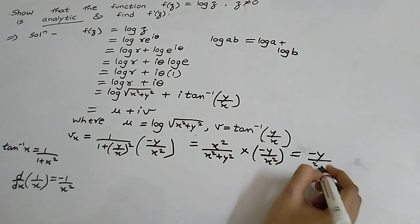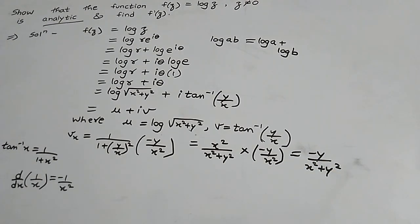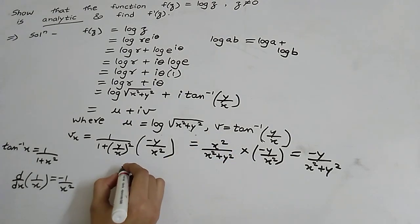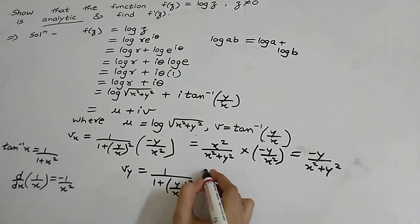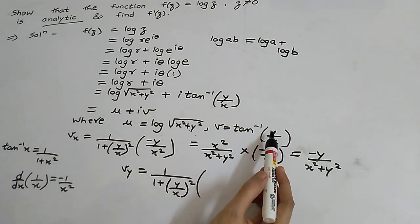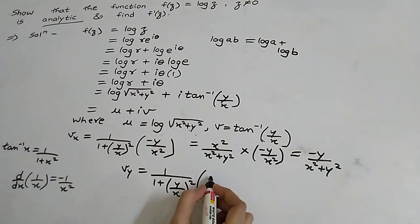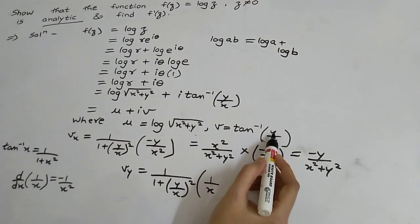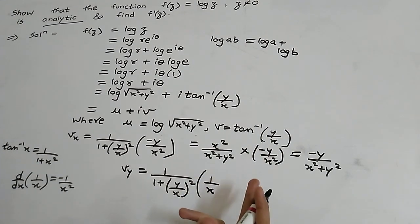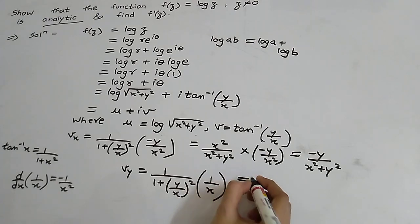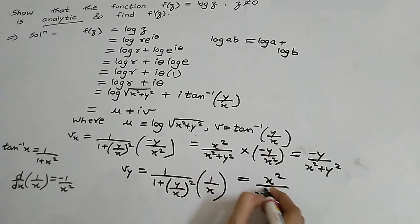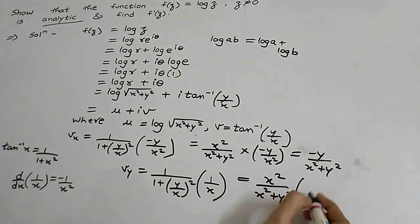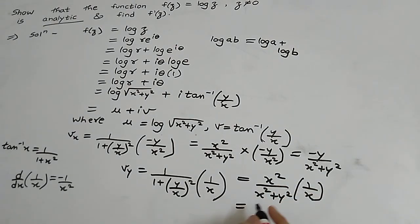Now we differentiate v with respect to y. So v_y = 1/(1 + (y/x)²) · 1/x, since x is constant with respect to y and d/dy(y) = 1. Cross-multiplying gives x²/(x² + y²) · 1/x = x/(x² + y²).